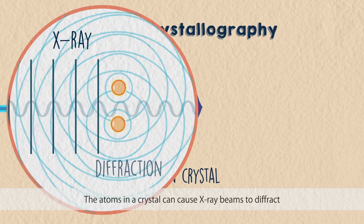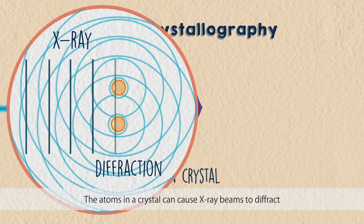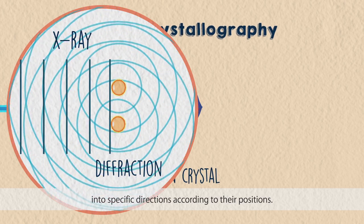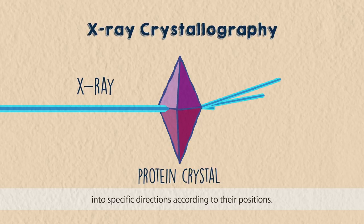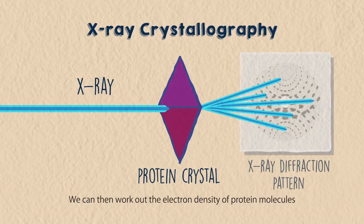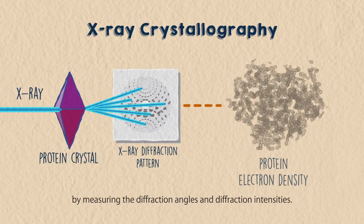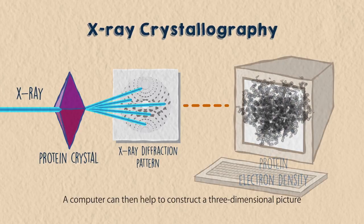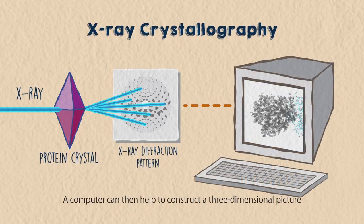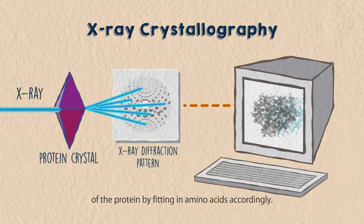The atoms in a crystal can cause X-ray beams to diffract into specific directions according to their positions. We can then work out the electron density of protein molecules by measuring the diffraction angles and diffraction intensities. A computer can then help to construct a three-dimensional picture of the protein by fitting in amino acids accordingly.